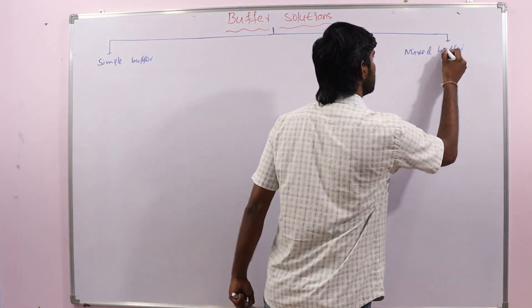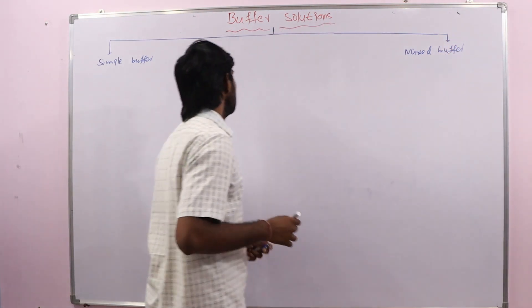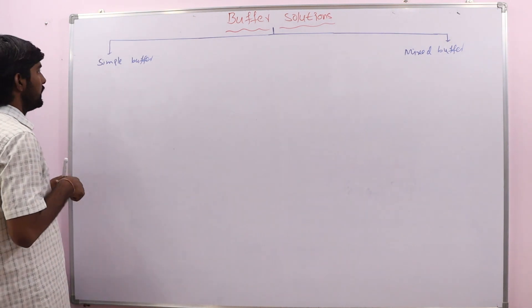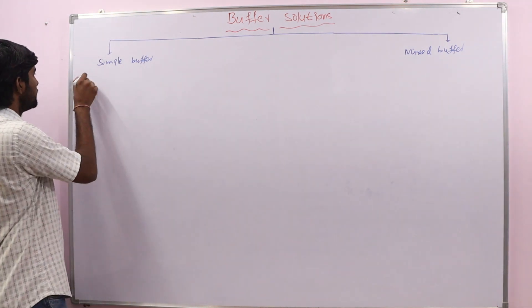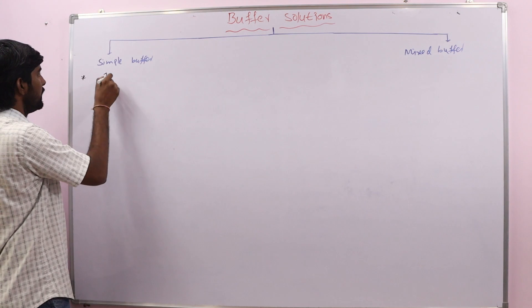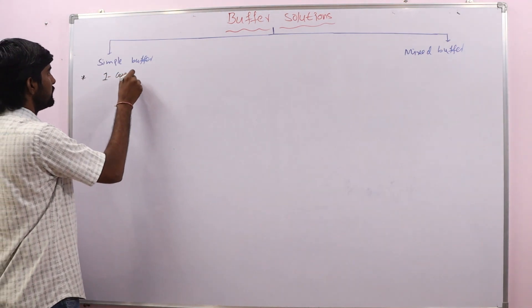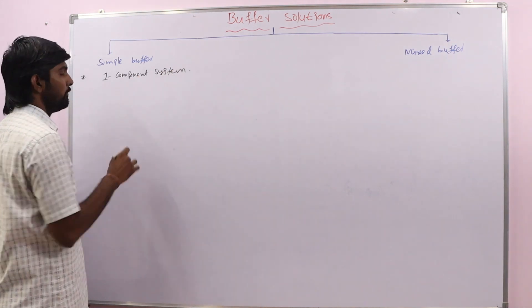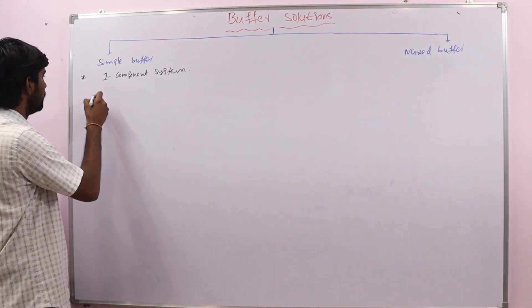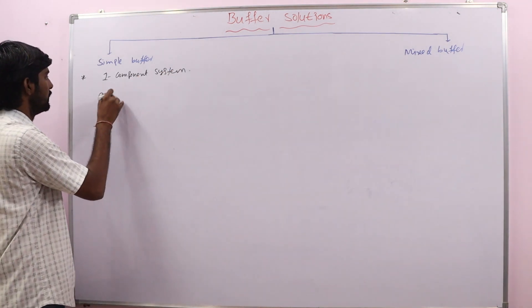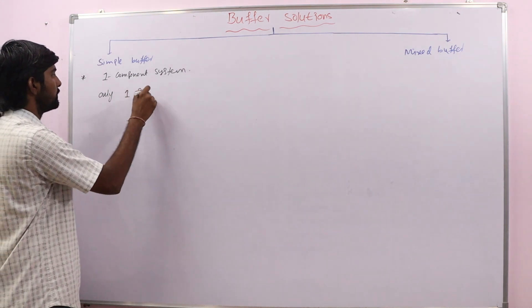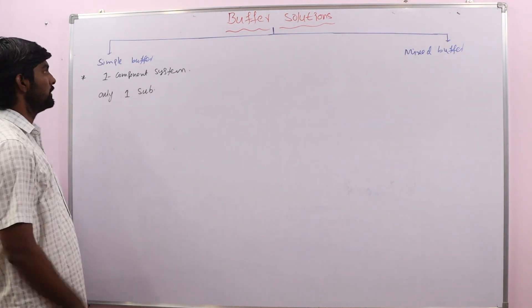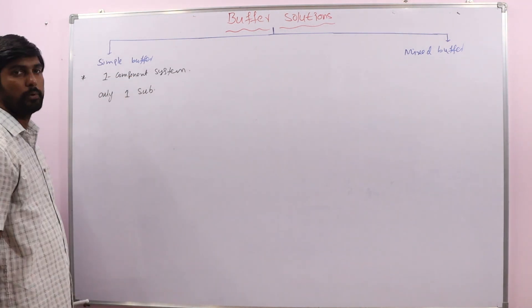A simple buffer is a one-component system, meaning a buffer solution which contains only one substance. If only one substance is present in the buffer solution, then that is called a simple buffer, or it is a one-component system.